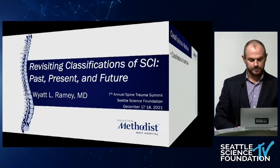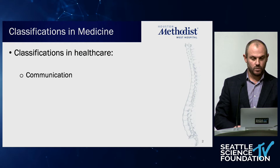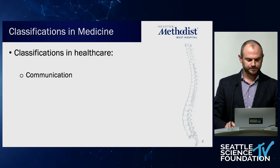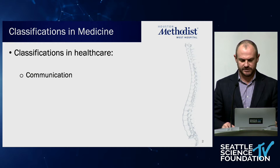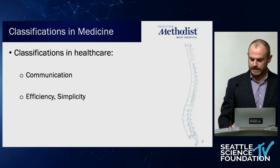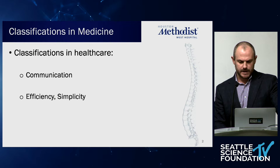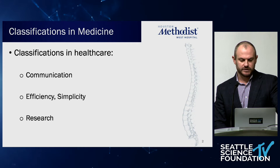Why do we have classifications in healthcare to begin with? Well, one reason is that they provide a really easy way for us to communicate as physicians — so spine surgeons can communicate easily with the ER, traumatologists, and intensivists, which allows us to practice medicine efficiently and with simplicity. Time and resources are always of the essence, especially nowadays. And lastly, one of the most important aspects of classification systems is that they allow us to perform high-quality research studies.